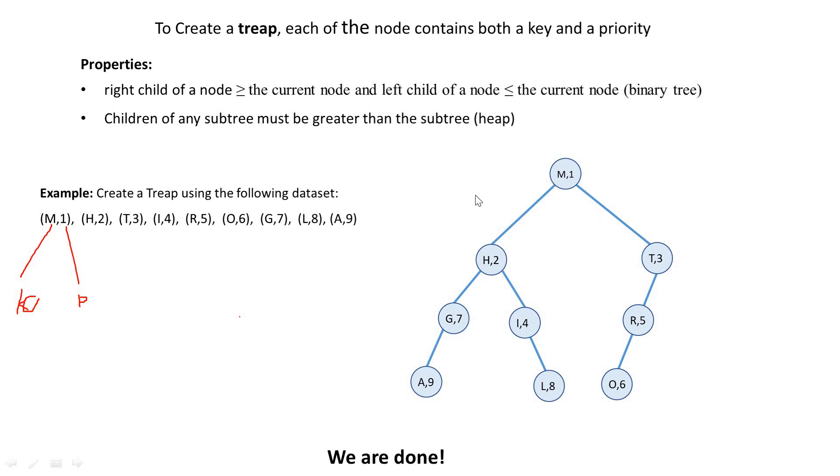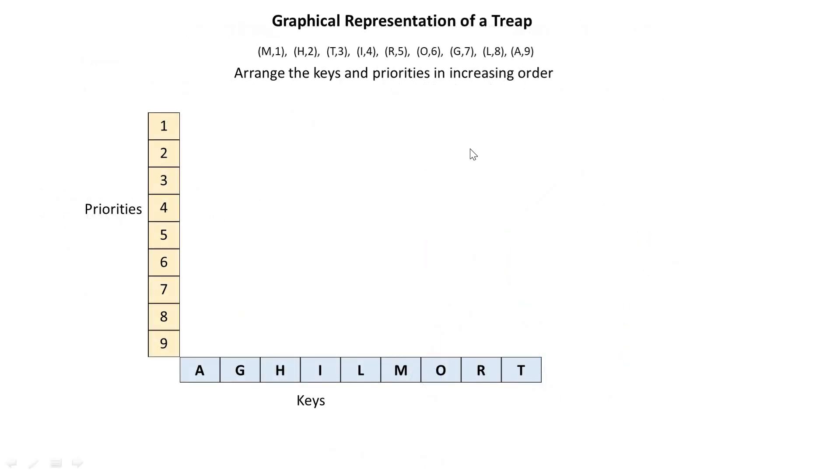But the most interesting aspect of a treap is something called a treap graph. This treap graph is very important and you need to know it. Let me just explain it to you. To create a treap graph, you need to arrange the keys and priorities in increasing order. So in this way we have priorities here: 1, 2, 3, 4, 5, 6, 7, 8, 9.